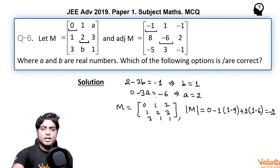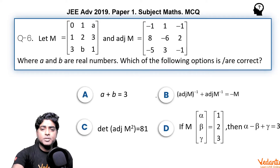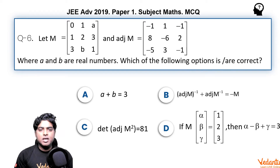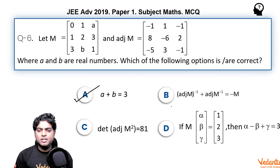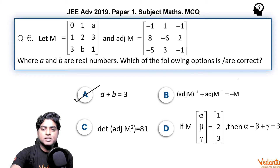Going back to the options: A was 2 and B was 1, so A + B = 3, and option A is correct. Now we will check option C first, then B, then D.